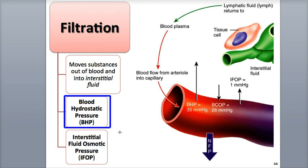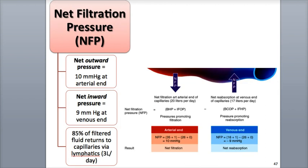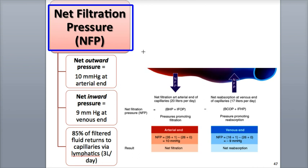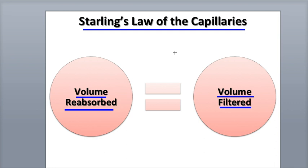There are two pressures that promote filtration: blood hydrostatic pressure, or BHP, which is the pressure produced as a result of the heart's contraction, and interstitial fluid osmotic pressure, also called IFOP. Reabsorption of fluid is promoted mainly by blood colloid osmotic pressure, or B-COP. Net filtration pressure, or NFP, is the overall result of the interaction of the two forces, filtration and reabsorption, and indicates whether blood volume or interstitial fluid volume will change or stay the same. In normal circumstances, the volume of solutes and fluid reabsorbed is approximately the same as the volume that is filtered. This balance is called Starling's Law of the Capillaries.